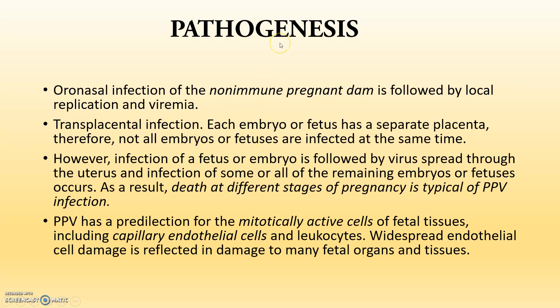The pathogenesis is actually that oro-nasal infection in the non-immune pregnant pig is followed by local replication of the virus, and the virus will go to the blood, producing viremia — the presence of virus particles in blood. Through the placenta, the virus goes into the embryo.